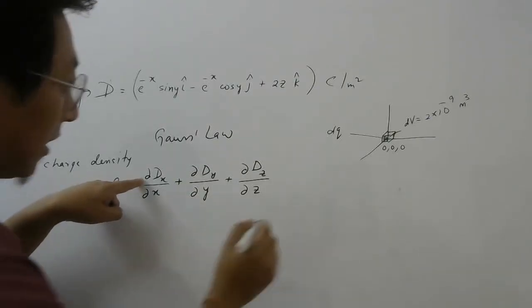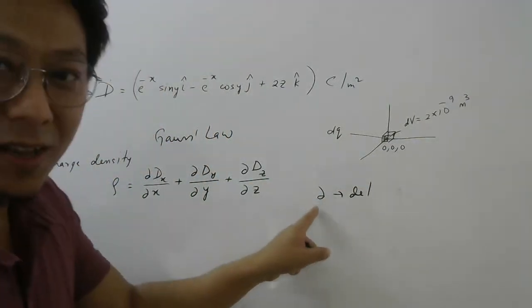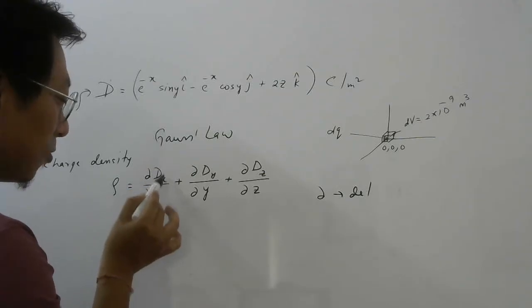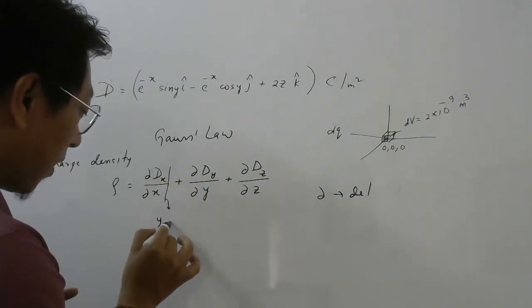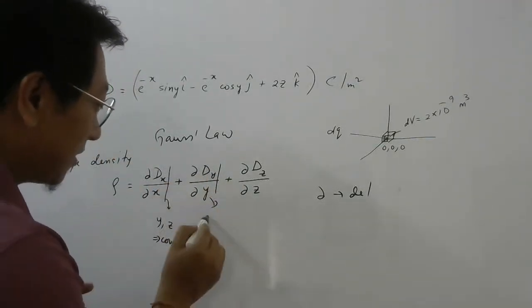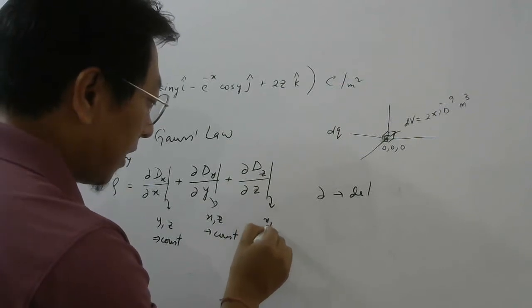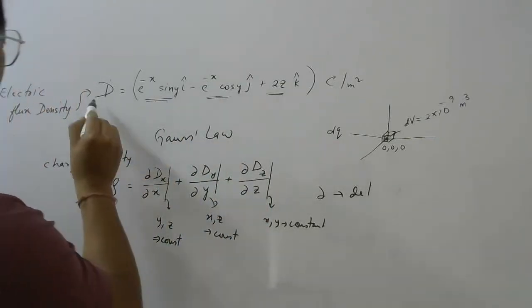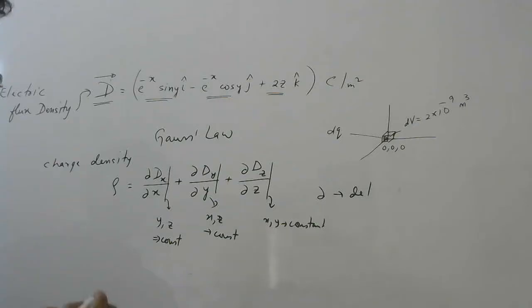If you notice, we are writing ∂ (del), not d. When we write del, it means partial derivative — you take normal differentiation of Dx with respect to x but treat y and z as constants. Similarly, when differentiating with respect to y, treat x and z as constants; and when differentiating with respect to z, treat x and y as constants. Here Dx, Dy, Dz are the x, y, and z components of the vector D̄, which they call electric flux density.